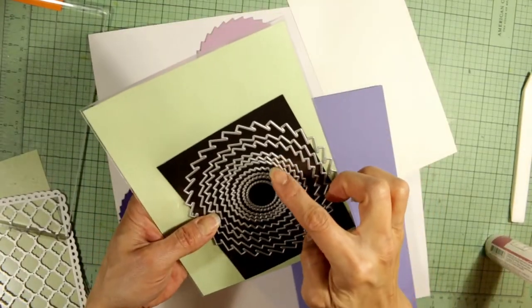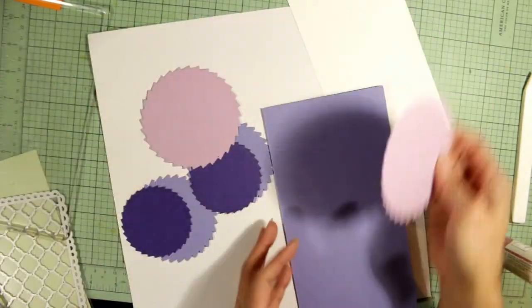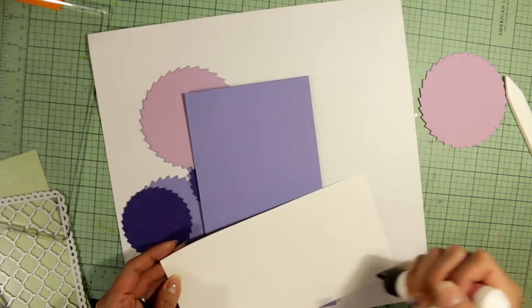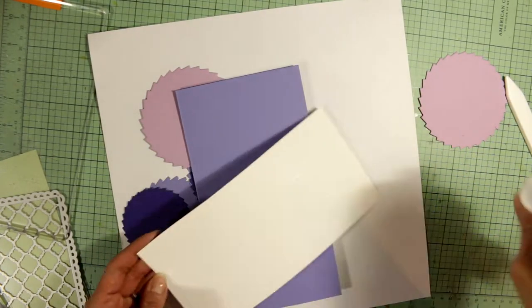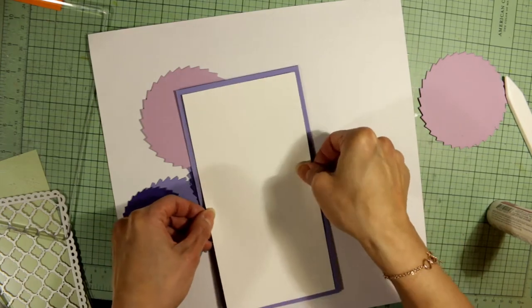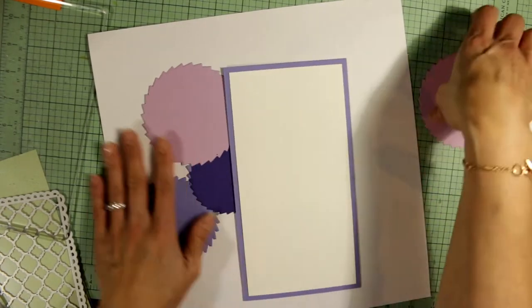So I'm using this spiral die set from Diamond Dyes. It's called Stackable Spiral Pattern Decor Dyes and I'm just showing you guys how I'm putting together the card.